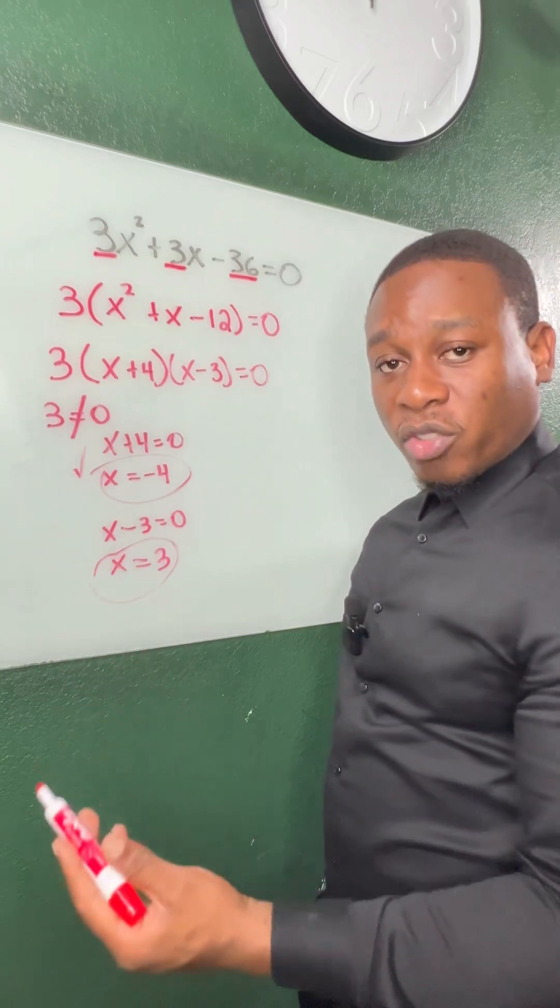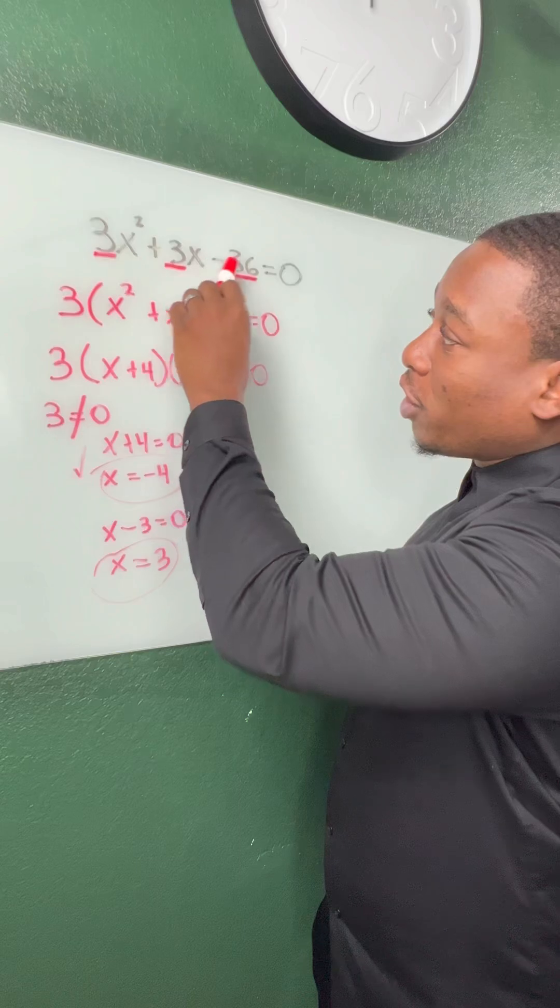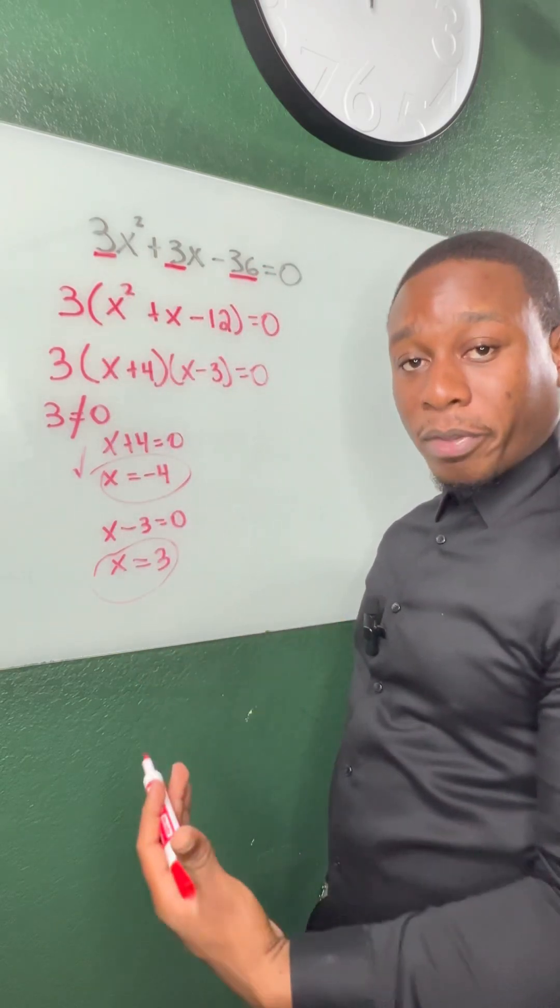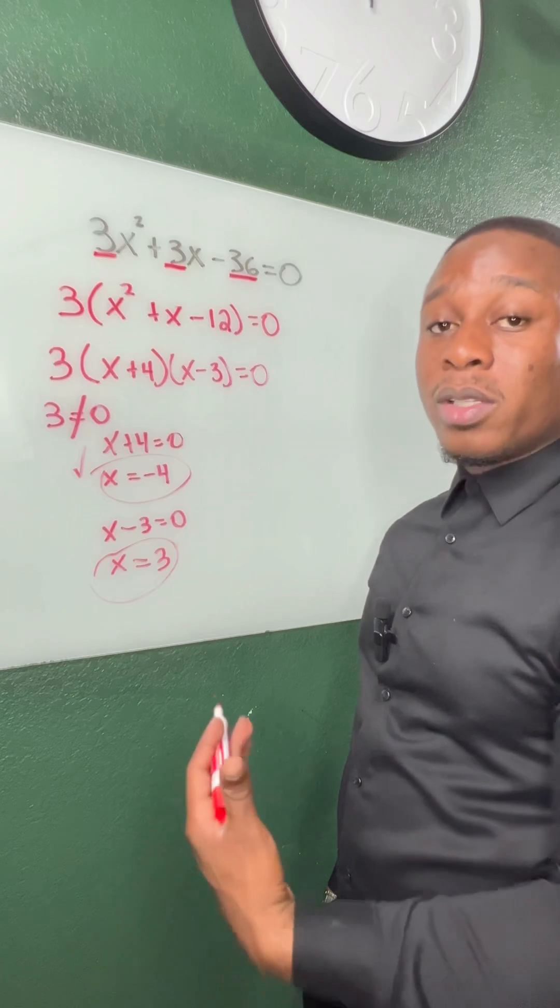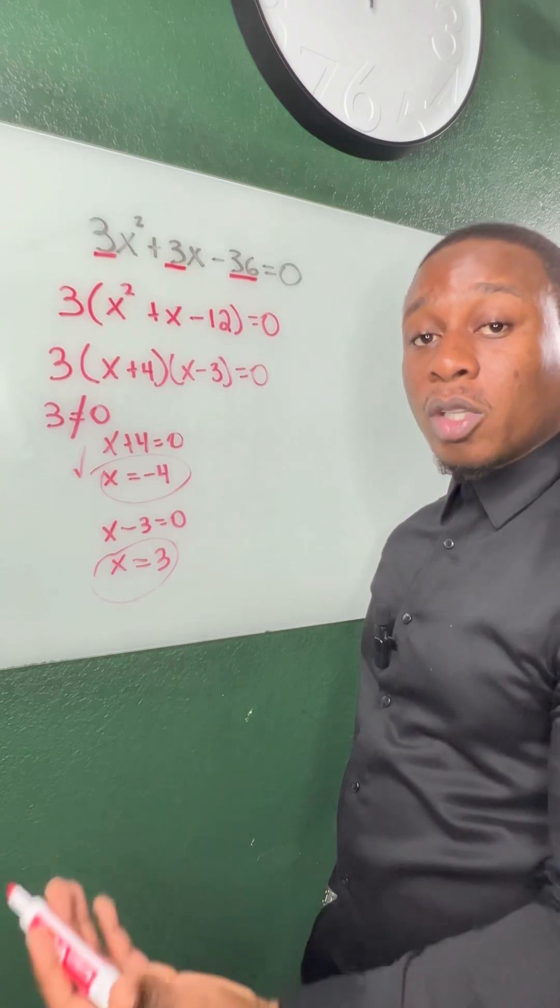Now if they ask you about extraneous solutions, just plug back negative 4 in for each x or positive 3 in for each x, and when you simplify, it should equal to 0. This is how you'll know if you have a true statement or an extraneous solution.